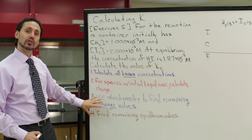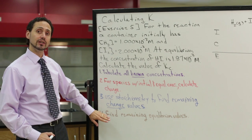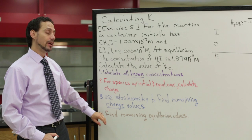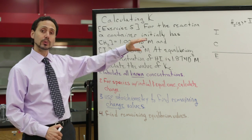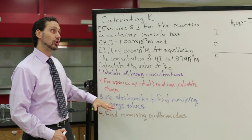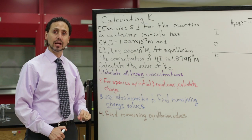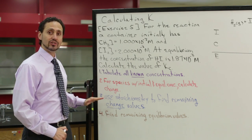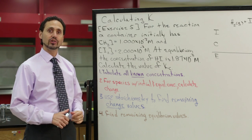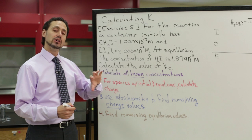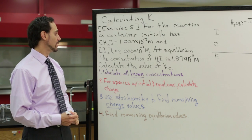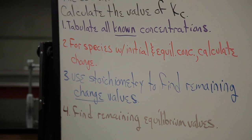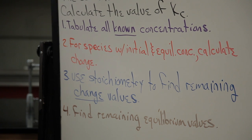I've listed here the different steps that you'll be using to solve this problem and populate your ICE table. As we work through the problem, I'll color code the values I'm writing on the ICE table to correspond with each of the steps, so you can follow along with where all the numbers came from. The first step is to tabulate all of the known concentrations given to us in the problem.